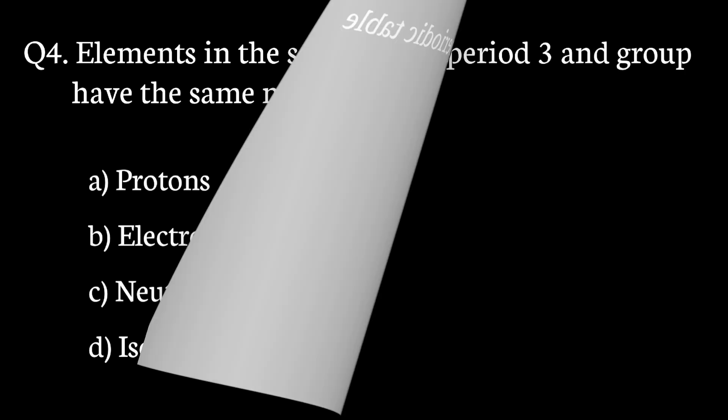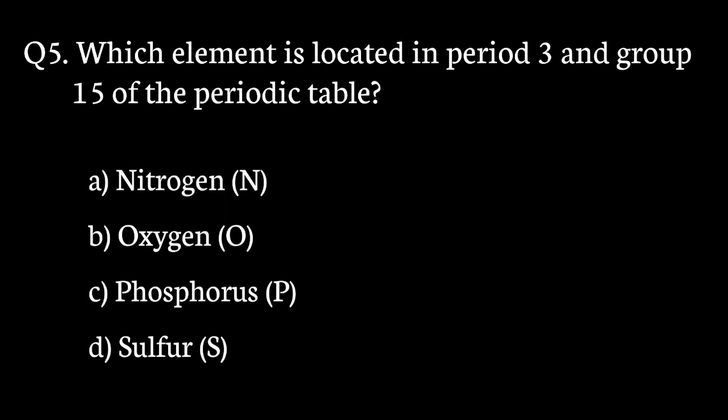Question number 5. Which element is located in period 3, group 15 of the periodic table? The correct answer to that question is option C. Phosphorus.